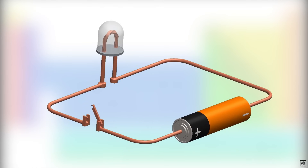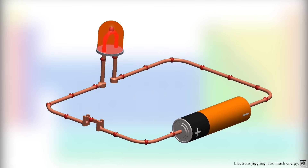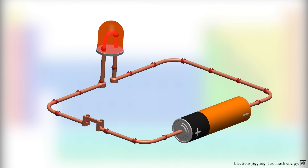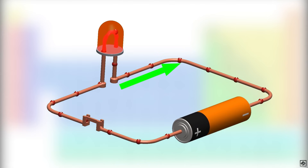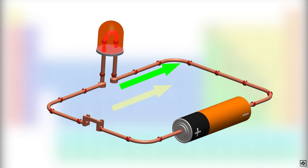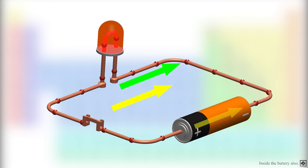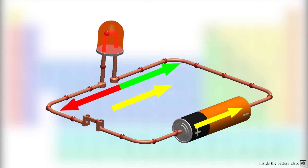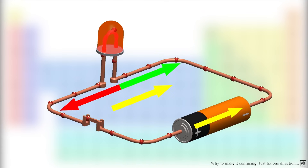Before everything, let us understand the flow of current and electrons with this basic circuit. In this circuit, the current flows from the positive terminal to the negative terminal of the battery. Also, the electric field flows from the positive terminal to the negative terminal outside the battery. The flow of electrons is opposite to the flow of the electric field or current, that is, electrons flow from the negative terminal to the positive terminal.